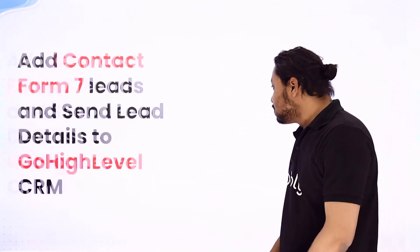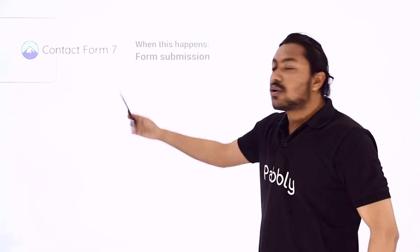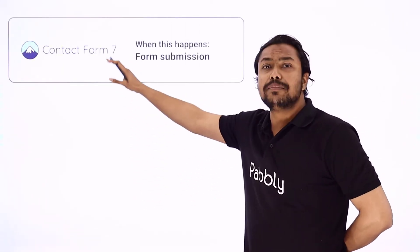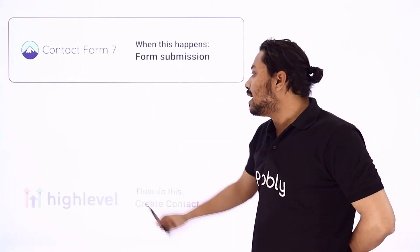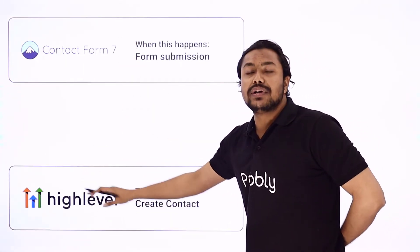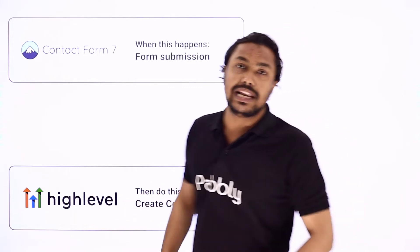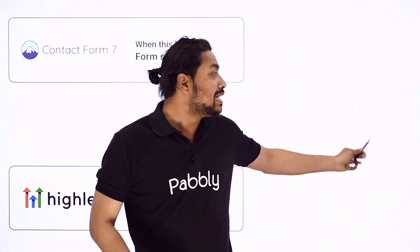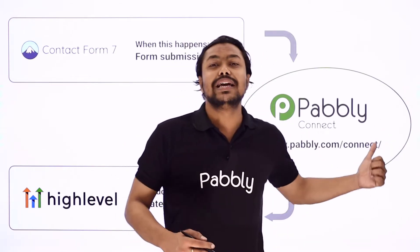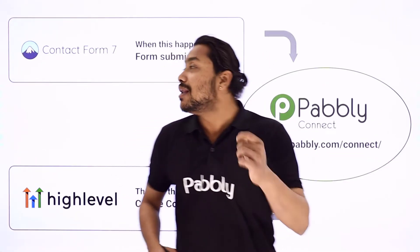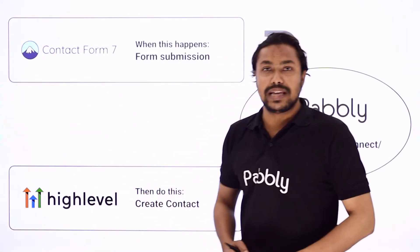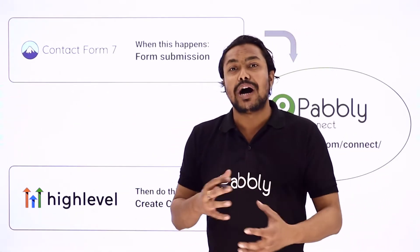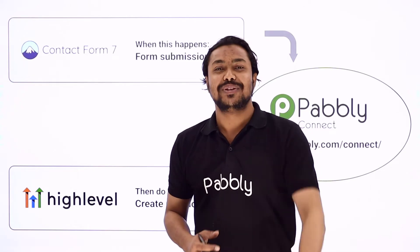What we are going to do is: first, we are going to do a form submission in Contact Form 7, and then those details will be shared as a lead to your GoHighLevel account and saved there. To do this automation, we are going to use Pabbly Connect, an integration and automation service that will help you connect Contact Form 7 and your GoHighLevel account together.